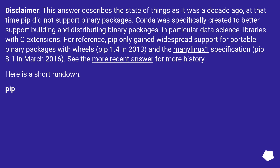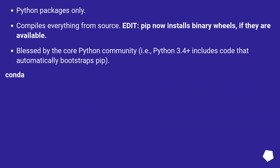Here is a short rundown. Pip: Python packages only, compiles everything from source. Edit: pip now installs binary wheels if they are available, blessed by the core Python community — i.e., Python 3.4 plus includes code that automatically bootstraps pip.